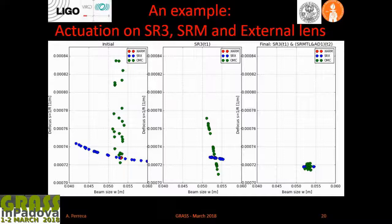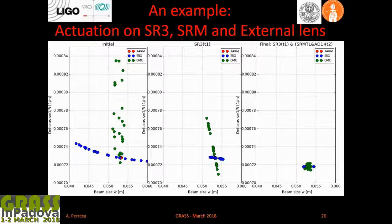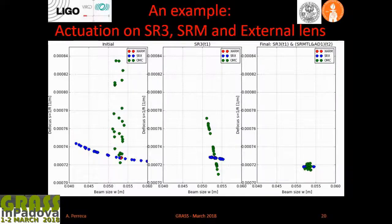That's an ideal situation — a random configuration of 25 possible configurations. By applying only SR3, you can see that modes are starting to collect in the same place. And the final result, if you also apply the lens we were considering, all the modes will be in the same place. That is the ideal situation. This is why we decided to actuate on these elements.